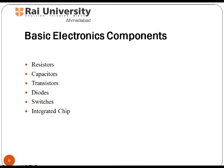An electronic component is any basic discrete device or physical entity in an electronic system used to affect electrons or their associated fields. Electronic components have two or more electrical terminals. These components help in building electronic circuits for various devices. You can easily identify these components such as resistors, capacitors, transistors, diodes, switches, and integrated circuits, etc.